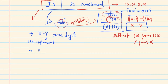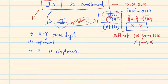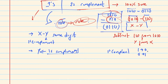First, we will start with y to find its one's complement. What is one's complement? It is simply the reciprocal — 1 becomes 0 and 0 becomes 1. For example, if this is 1 0 1 0, what is its one's complement?